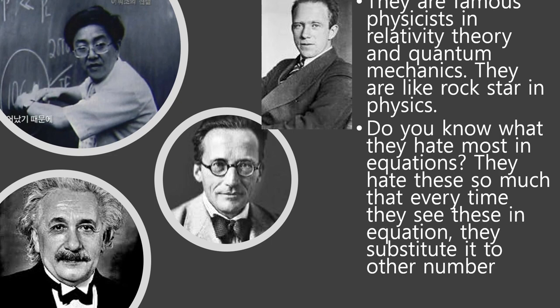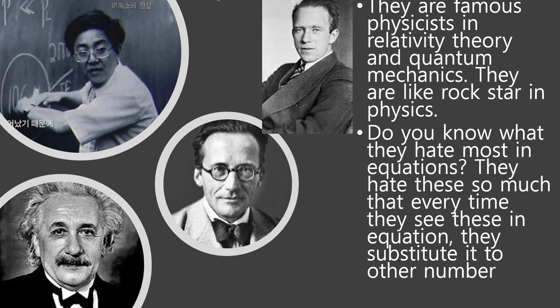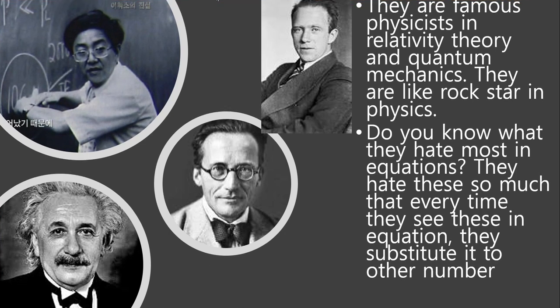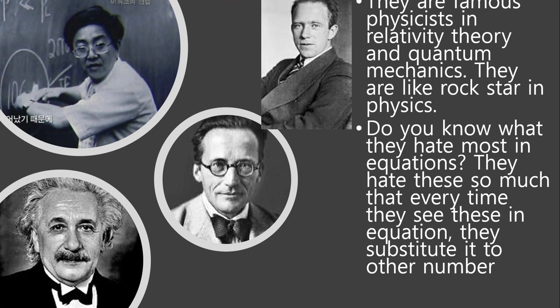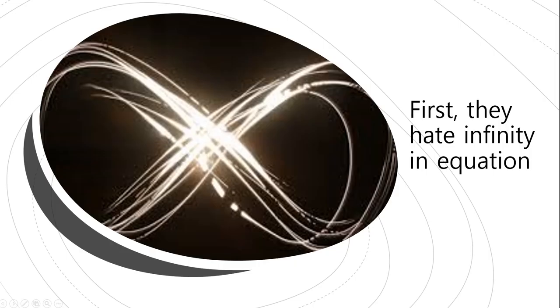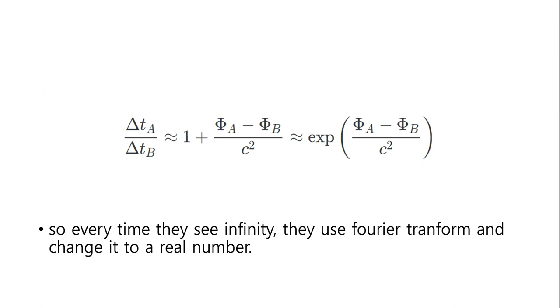These are famous physicists in relativity theory and quantum mechanics — they are like rockstars in physics. Do you know what they hate most in equations? They hate these so much that every time they see them in equations, they substitute them with other numbers. First, they hate infinity in equations, so every time they see infinity, they use a zeta transform and change it to a real number.